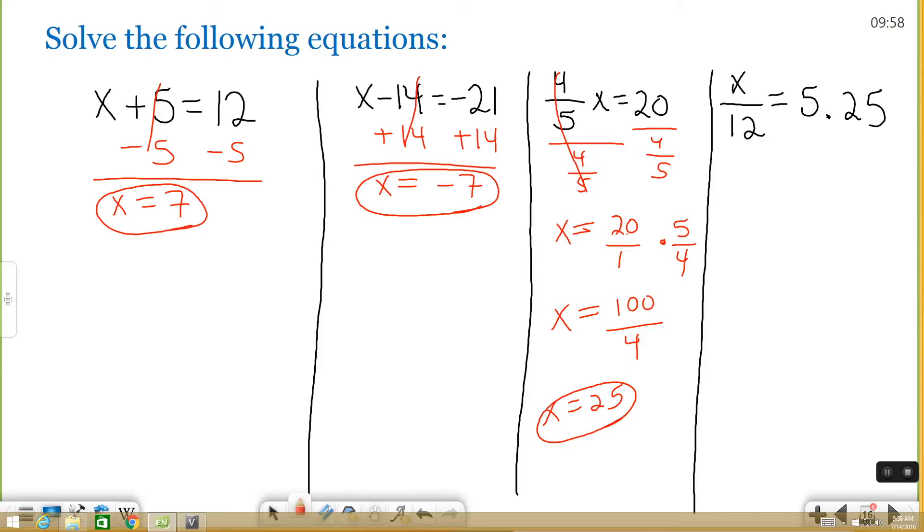All right, so this last one, I have x divided by 12 equals 5.25. Well, the opposite of dividing by 12 is multiplying by 12. So I'm going to do that to both sides.